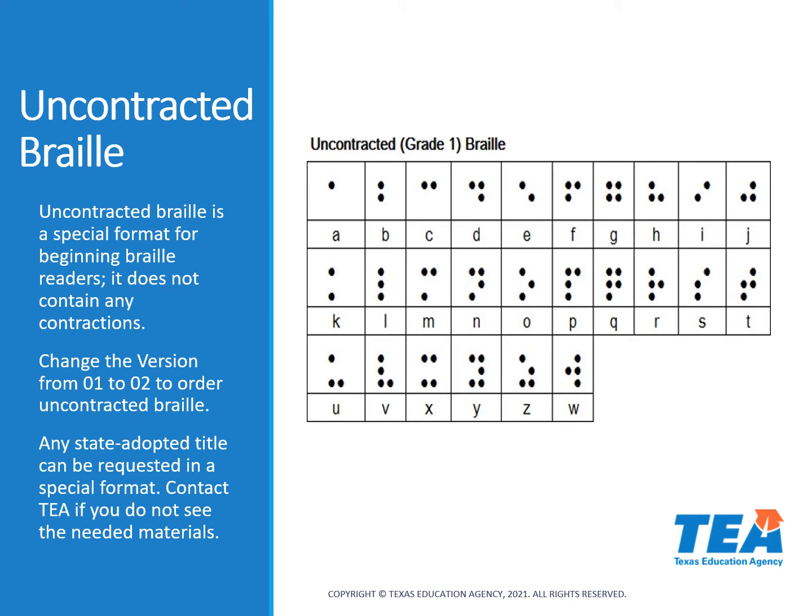Uncontracted Braille is a special format for beginning Braille readers and it does not contain any of those contractions. If a student needs uncontracted Braille, you'll change the version to 2 to request it. If you don't see it listed as an option when entering your requisition on the pop-up menu, you can still request it — you would need to submit a help desk ticket and we can get that made available for you.